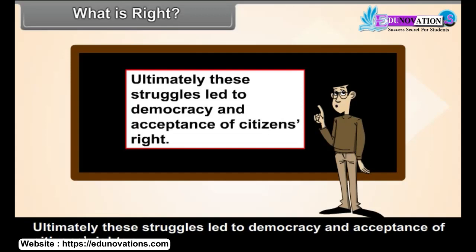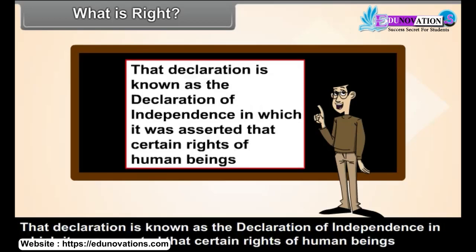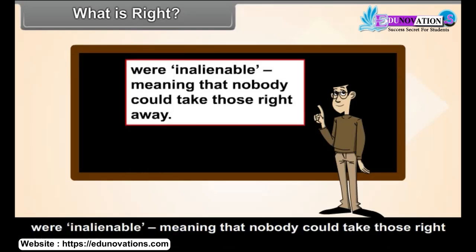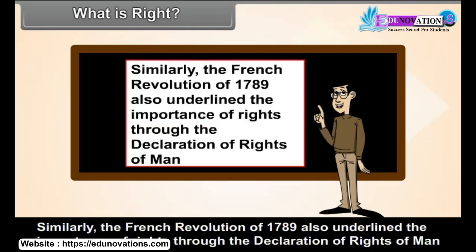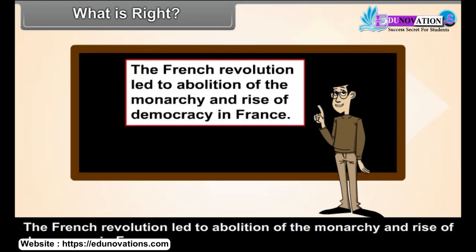Ultimately, these struggles led to democracy and acceptance of citizens' rights. In 1776, the American people declared their independence from England. That declaration is known as the Declaration of Independence, in which it was asserted that certain rights of human beings were inalienable, meaning that nobody could take those rights away. Similarly, the French Revolution of 1789 also underlined the importance of rights through the Declaration of Rights of Man and of the Citizens. The French Revolution led to abolition of the monarchy and the rise of democracy in France. In what way are rights related to democracy?